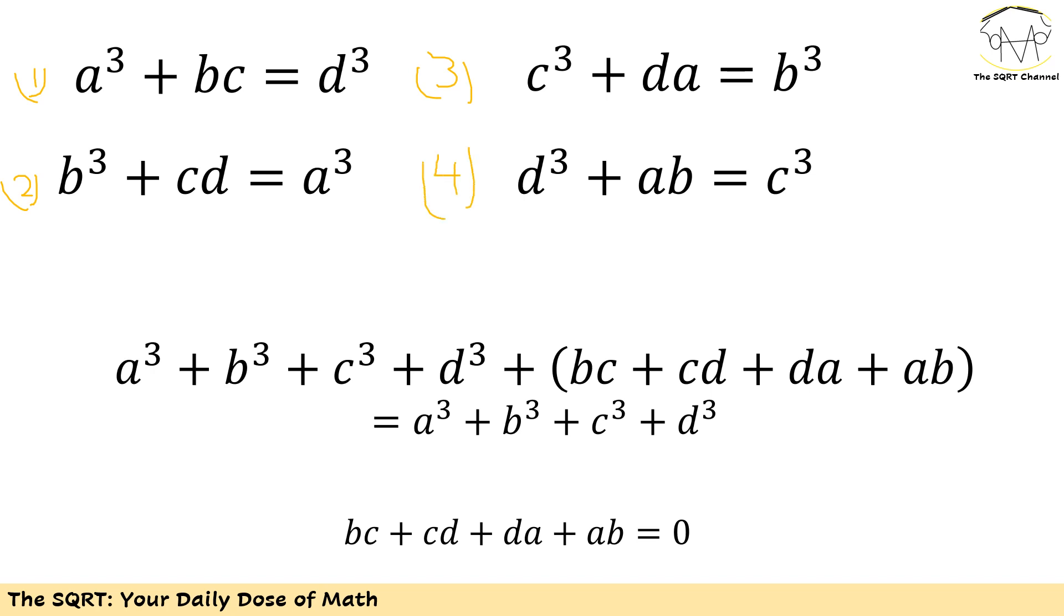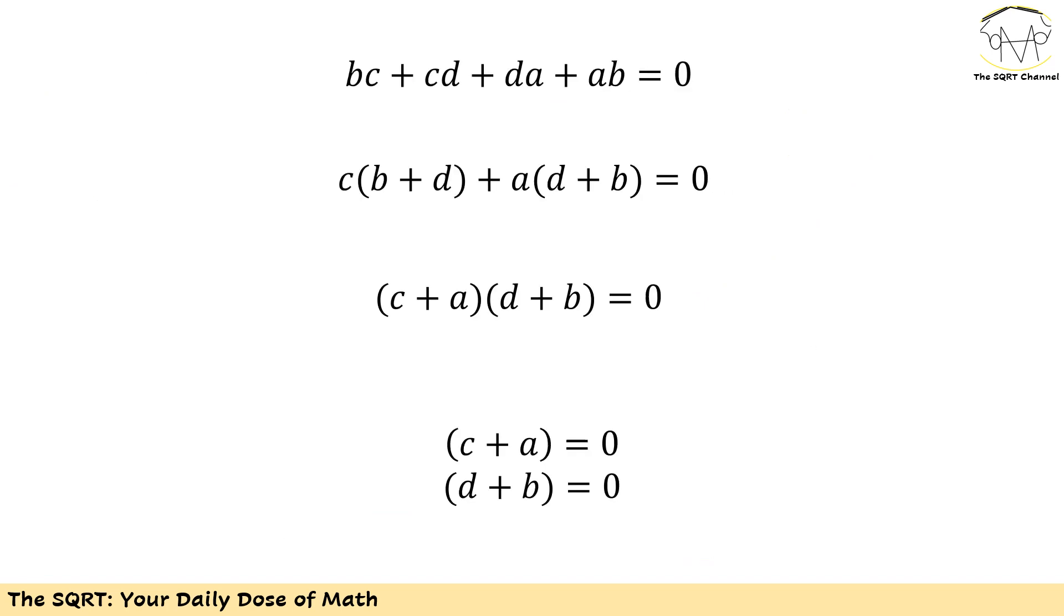Now to solve it, I'm going to add these expressions together. The reason is for each equation I have a cubic number plus another value equals to another cubic number. If you take a look at these, you will see that all four cubic numbers are going to appear on the left and right hand side. If I add all these together, I'm going to remove all these cubic numbers and I will end up with bc + cd + da + ab = 0.